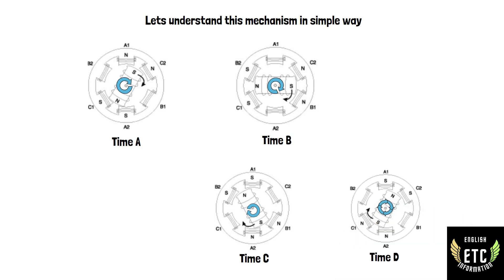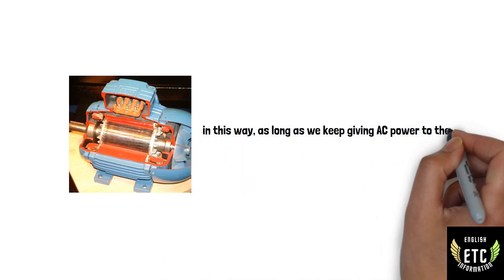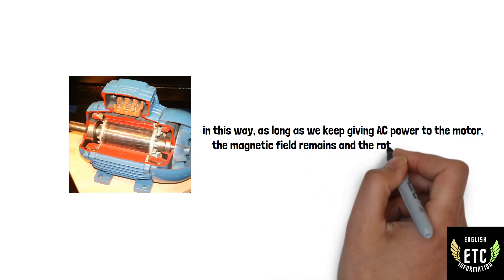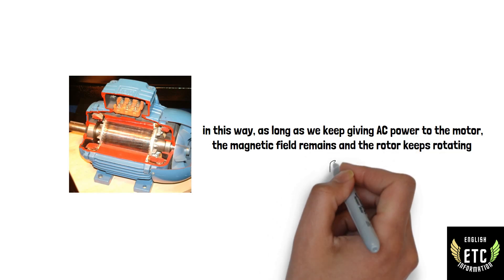And in this way, as long as we keep giving AC power to the motor, the magnetic field remains and the rotor keeps rotating. The rotating motion can be connected to a wheel or fan or any other appliances that we can drive, and this is how we use it.